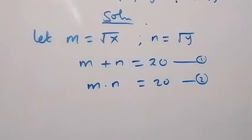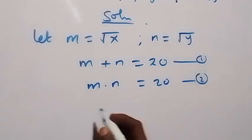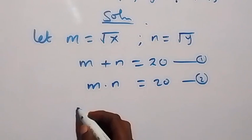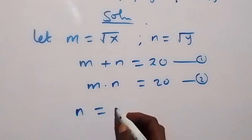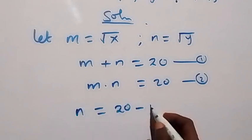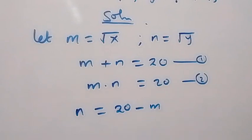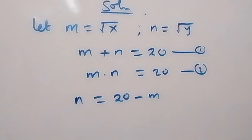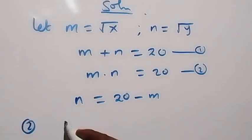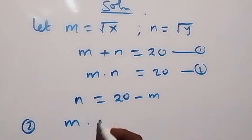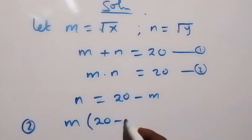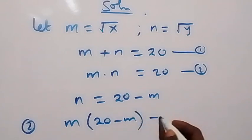From the first equation, we have n equals 20 minus m, and then when we substitute that into the second equation, equation 2 can be written as m multiplied by (20 minus m) equals 20.